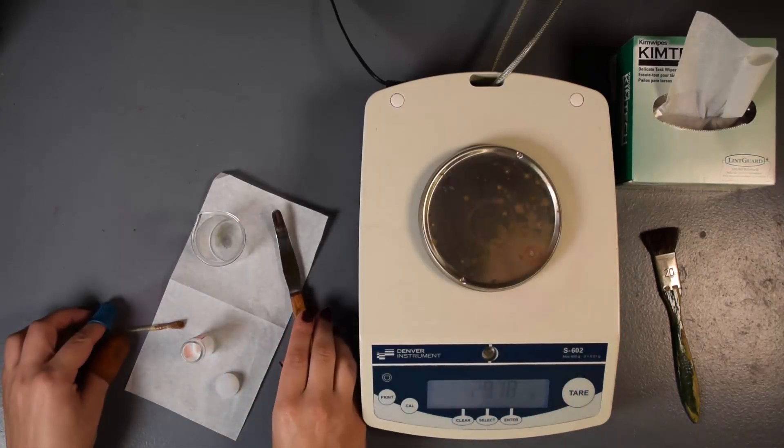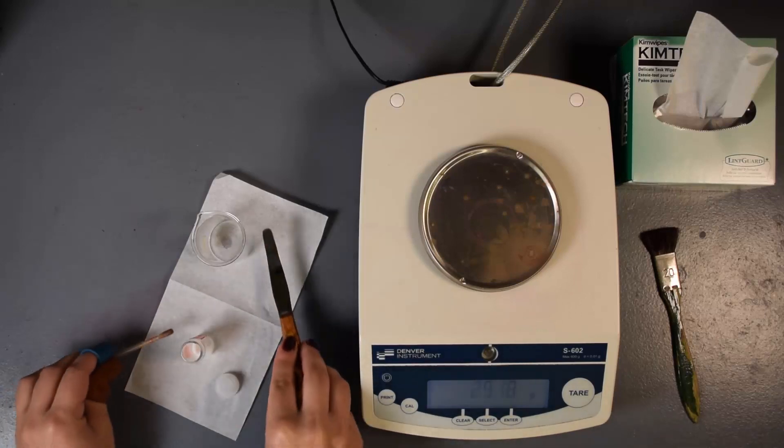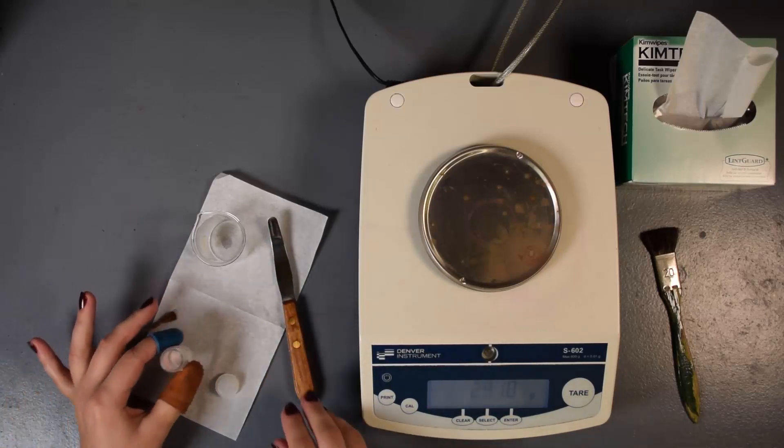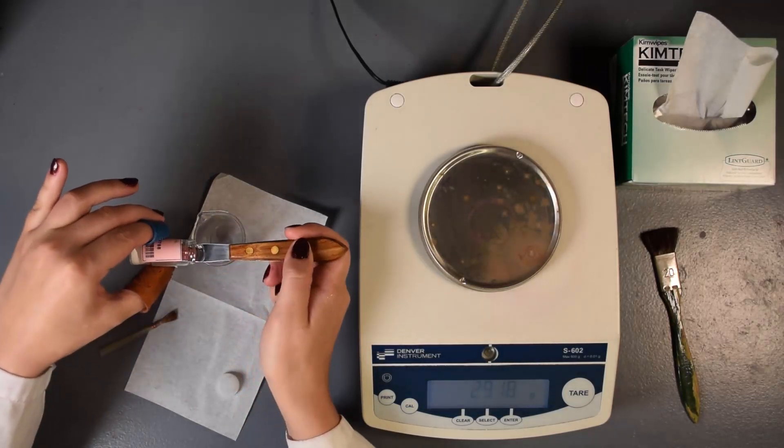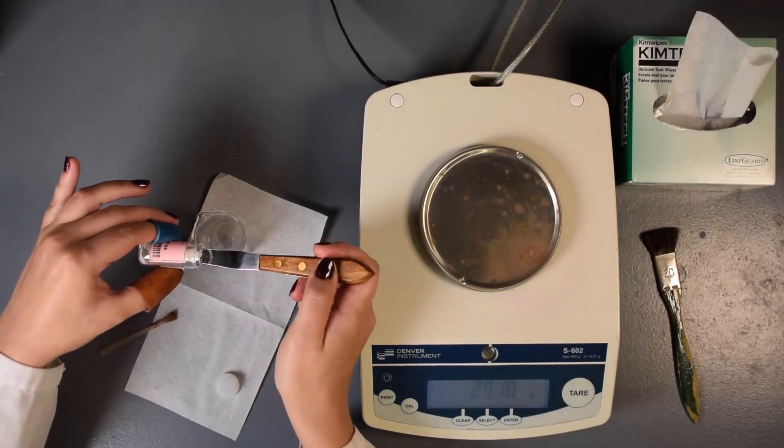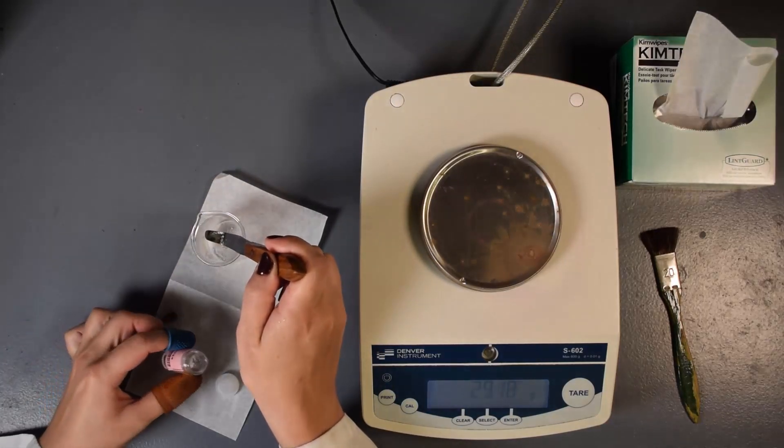Make sure your camel hair brush is clean by brushing it back and forth on your spatula. Hold the container over the beaker and carefully transfer the desired amount of compound from the container into the beaker using a spatula and camel hair brush. Remember to not touch the container with your bare fingers.